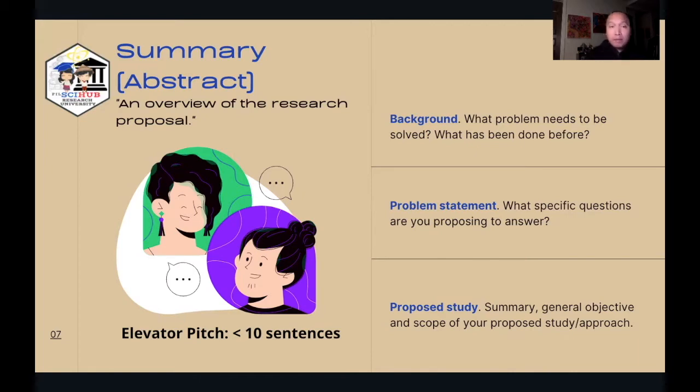Say, pumasok kayo ng building and you enter an elevator and you chanced upon one of your funding agencies. They ask you, what are you really proposing to do? An elevator pitch should be an overview of your idea. It should capture the essence and you should be able to communicate that within 30 to 60 seconds. Because elevator rides typically last 30 to 60 seconds on average. By limiting your sentences to less than 10, you can quite efficiently communicate the essence of your idea in less than a minute.